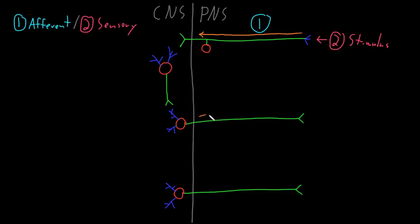These neurons are carrying information away from the central nervous system out into the periphery. So instead of calling them afferent neurons, we call them efferent neurons.